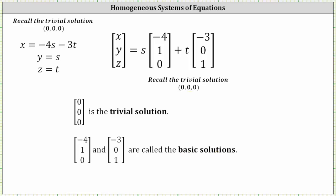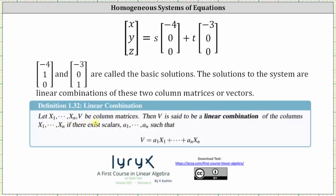One final point: if x sub 1 through x sub n and v are column matrices, then v is called a linear combination of x sub 1 through x sub n if there exist scalars a sub 1 through a sub n such that v can be written in that form. In our case, s and t are the scalars, and the two basic solution column matrices are x sub 1 and x sub 2. So the solutions to the system are linear combinations of the basic solution vectors. I hope you found this helpful.